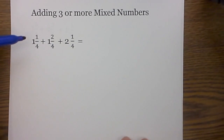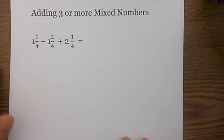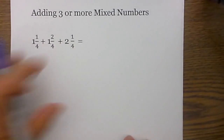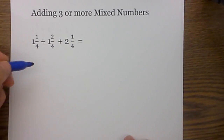A mixed number is when you have an integer and a proper fraction. I will show you two techniques. Let's start off with a fairly simple one.